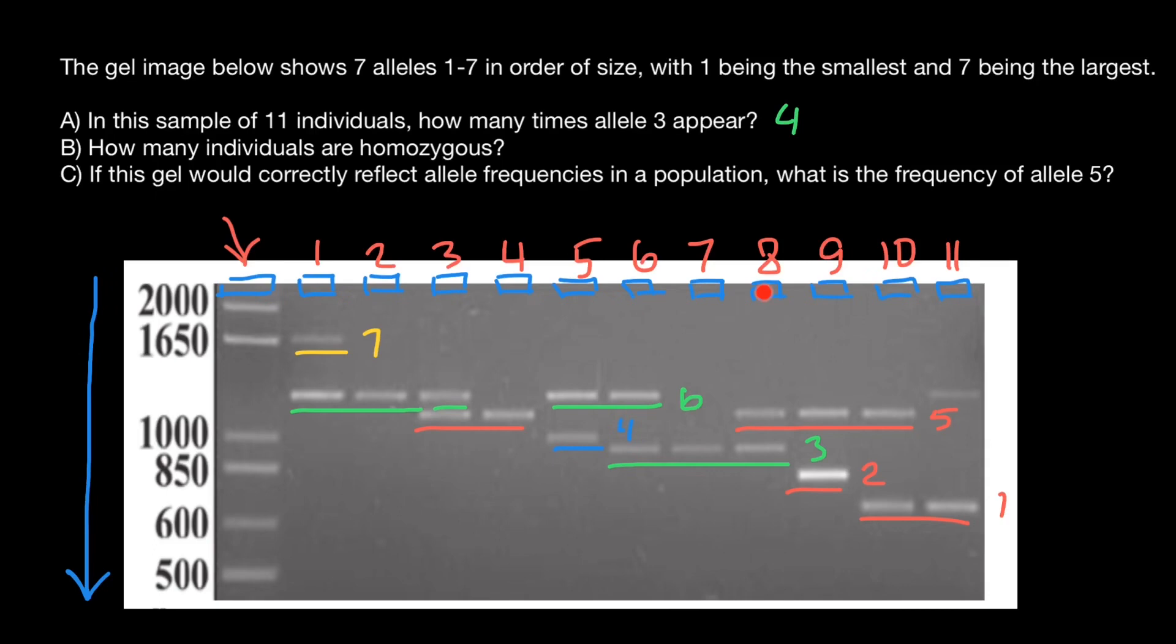Question B: how many individuals are homozygous? Individual number one is heterozygous, we see two bands. Individual number two is homozygous, we see only one band. Individual number three is heterozygous, two bands. Individual number four is homozygous, only one band. Individual five is heterozygous, six is heterozygous. Individual seven is homozygous. Individual eight is heterozygous, nine is heterozygous, ten is heterozygous, eleven is heterozygous. So our answer to question B is going to be three. Three individuals are homozygous.